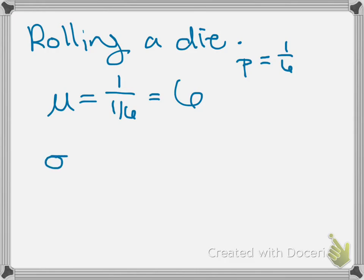To calculate our standard deviation, we'll again just use our formula, so it's going to be the square root of 1 minus p, which is going to be 5/6, divided by p squared, which is going to be 1/6 squared.